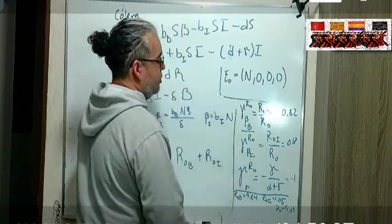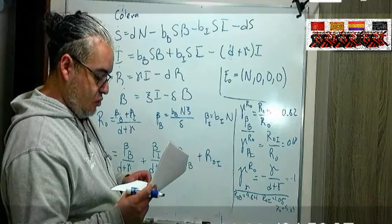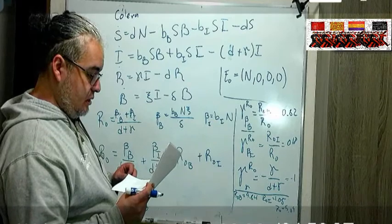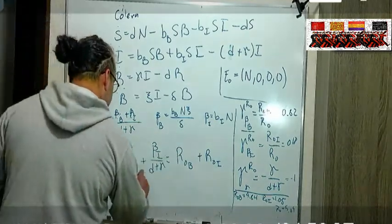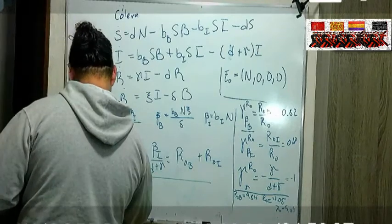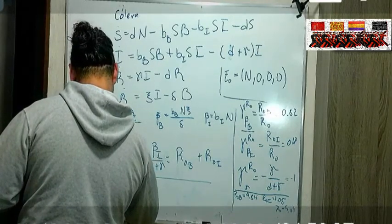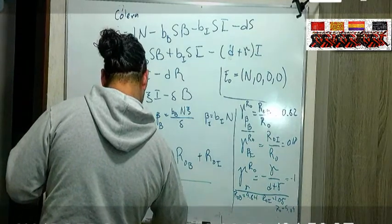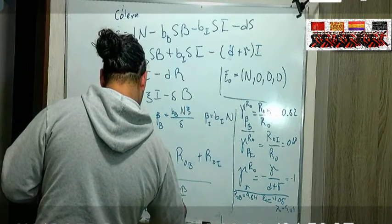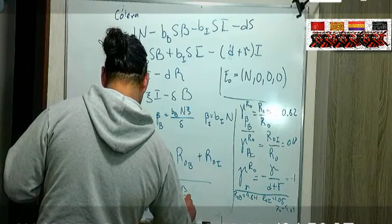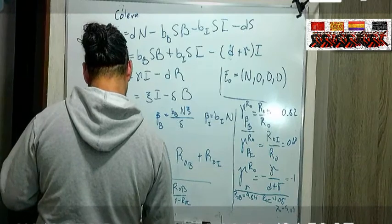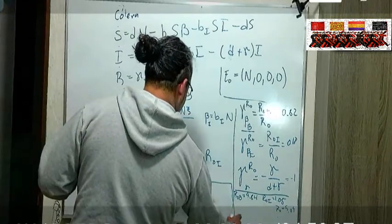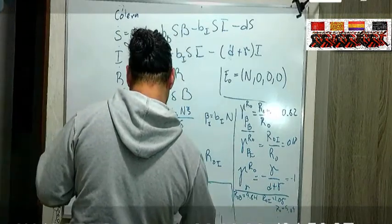Entonces el parámetro importante es la infección no directa, la que tiene que ver con beber agua mugrosa. Entonces cuál va a ser el tau S que vamos a tener. S va a ser otra vez los compartimentos, y tau S no es más que R0 B sobre 1 menos R0 I.